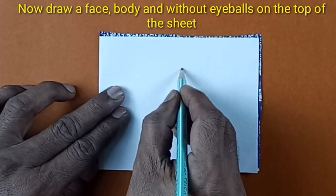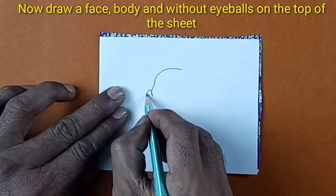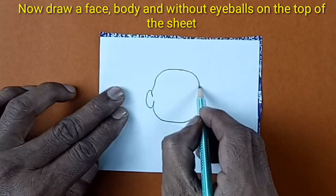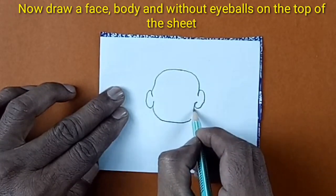Now draw a face, body, and without eyeballs on the top of the sheet.